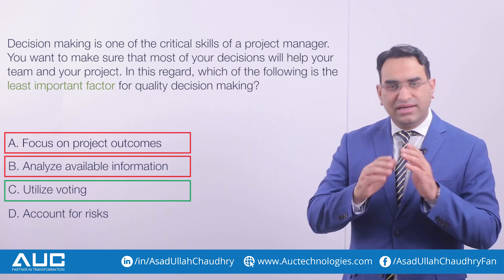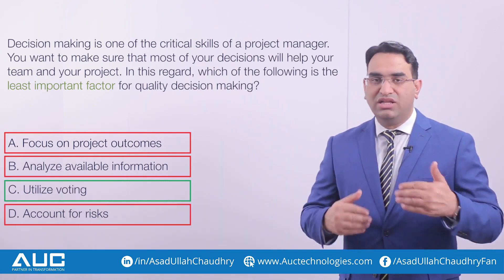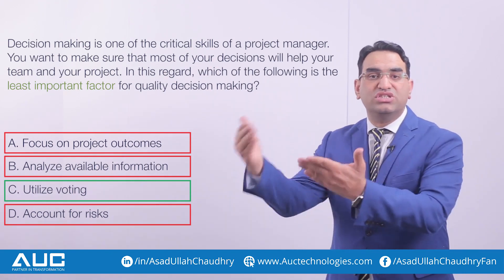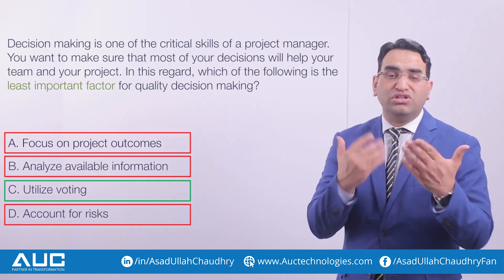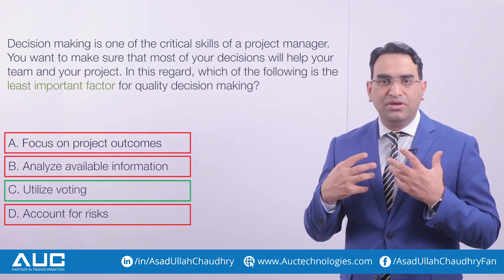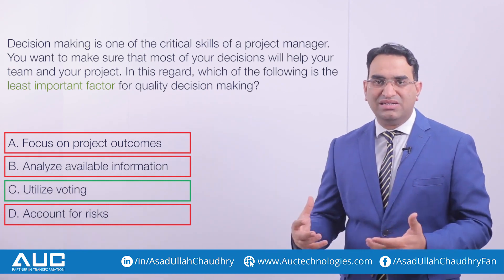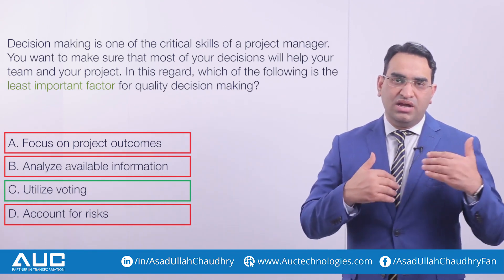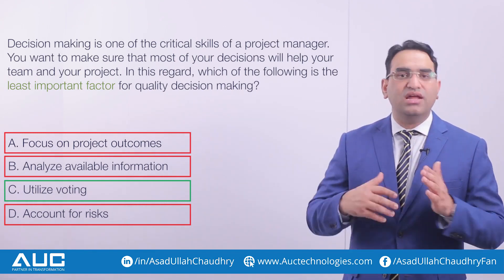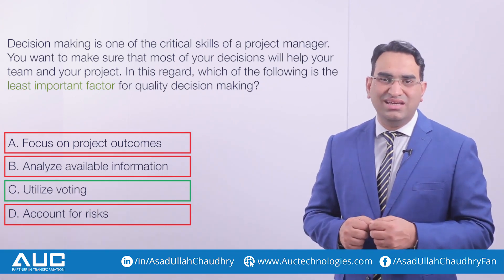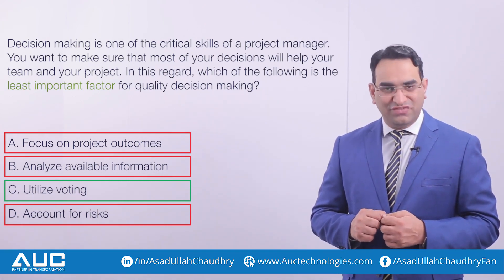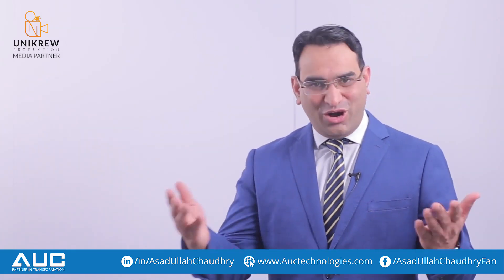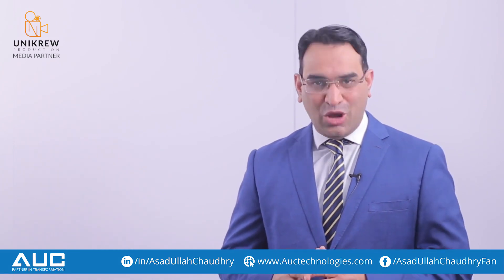Option D, 'account for risk,' has higher value than option C because when making a decision you have to see the consequences, how to resolve them, and what the constraints are. So the three key factors are: focus on outcomes, use available information, and account for risk. Option C — utilize voting — is the correct answer to this question as the least important factor. Congratulations to those who answered correctly; for others, I hope this helped.